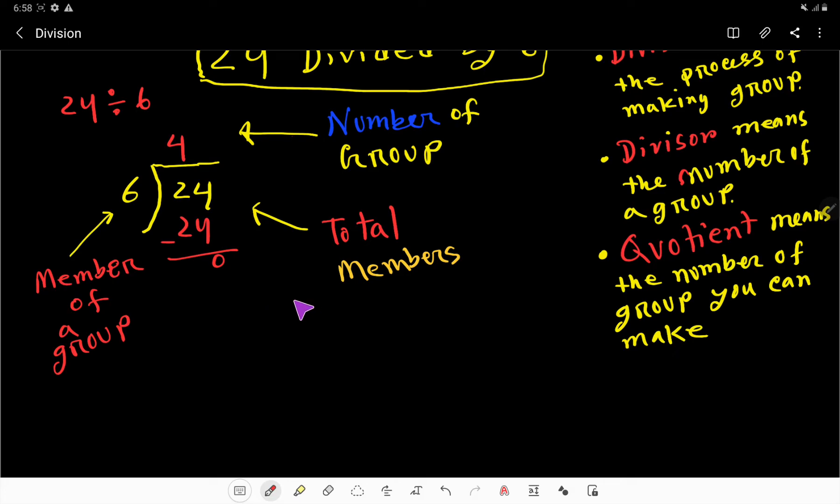So look here, we have 24 members, so I can indicate each member by this dot. So here we have 6, so I'll write here 6. So 6 number, 12 number, 18 number, then 24 number.